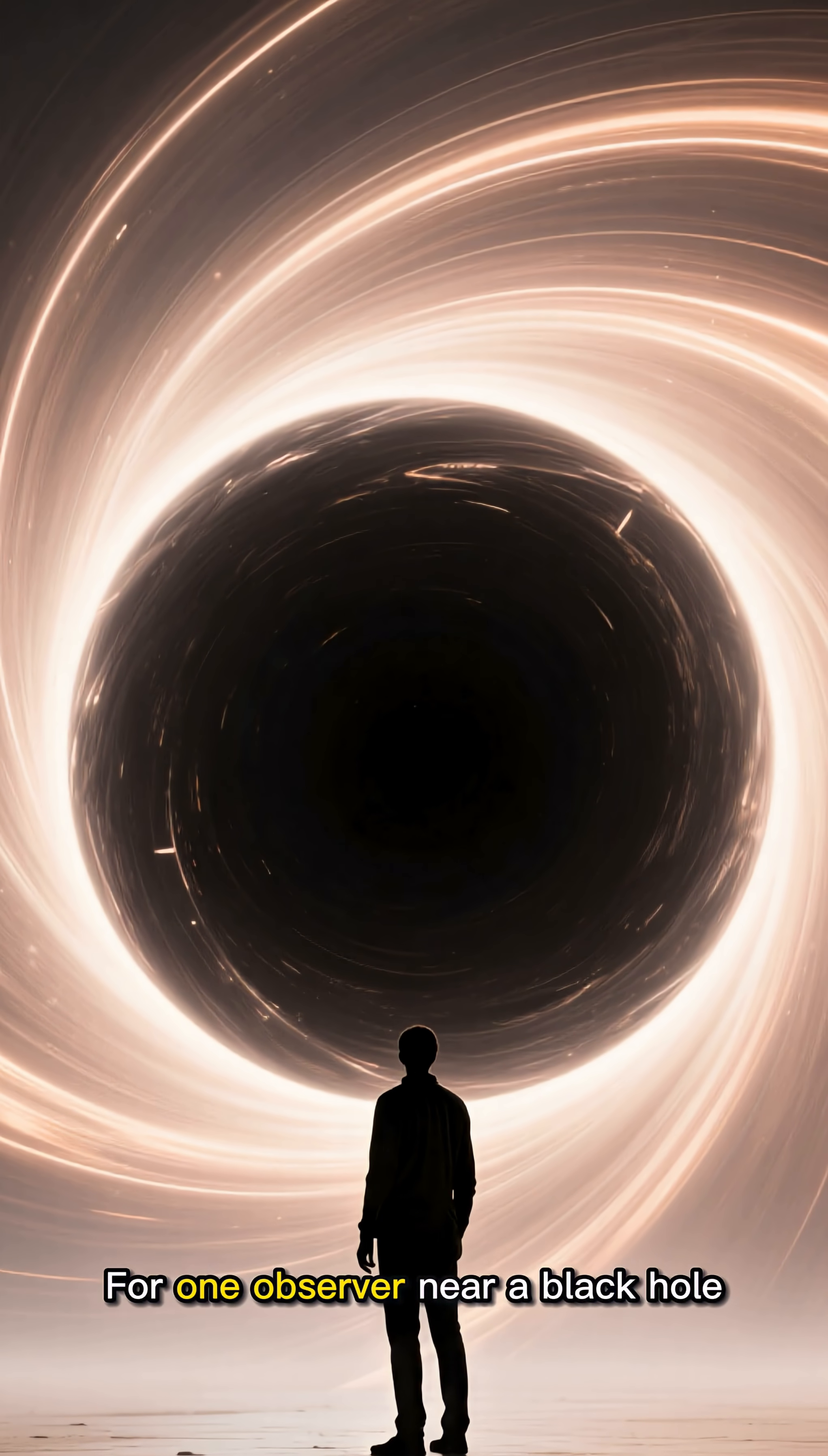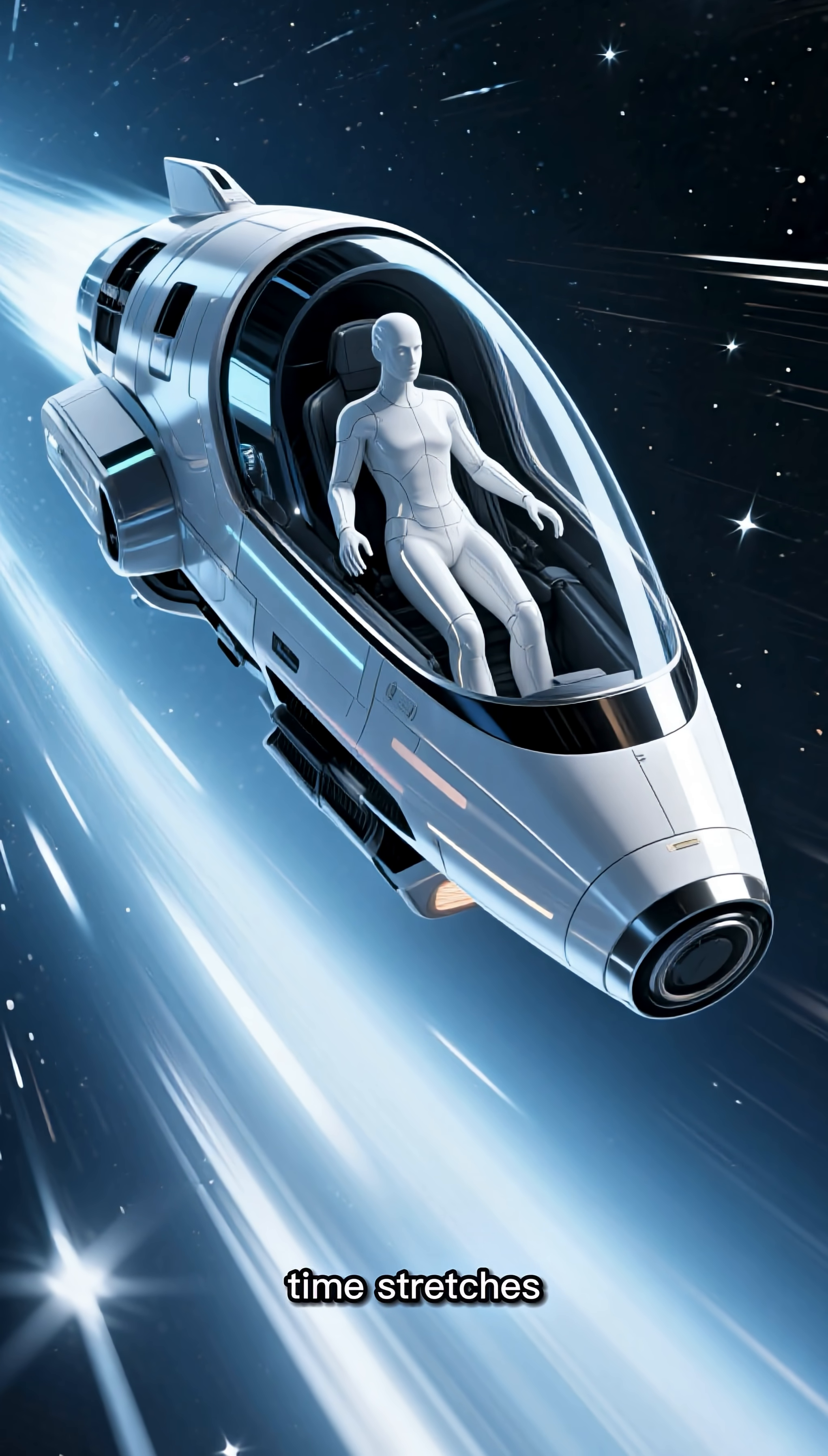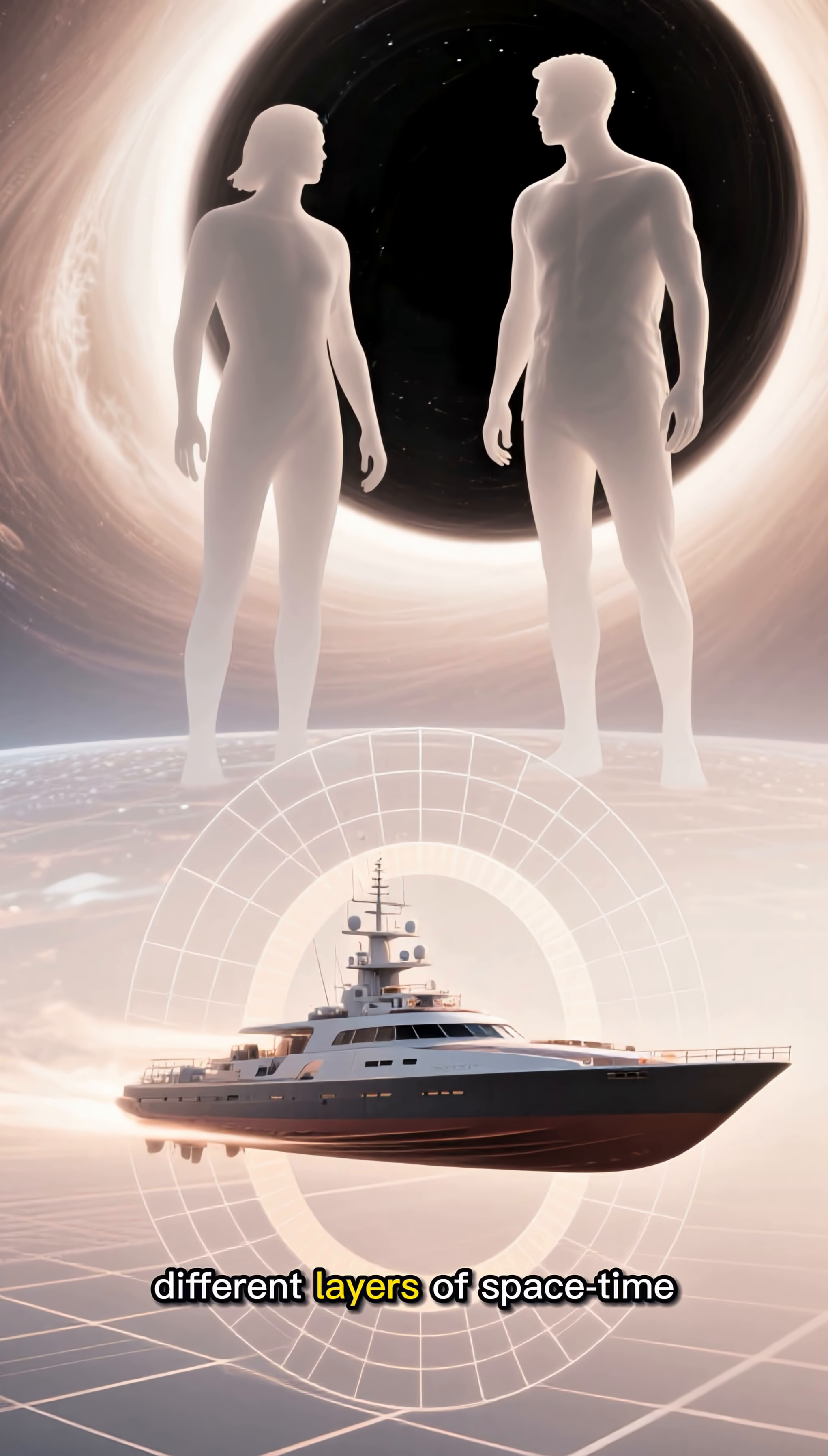For one observer near a black hole, time slows. For another racing close to the speed of light, time stretches. Both are correct. Their realities simply occupy different layers of space-time.